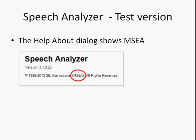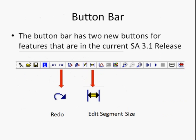You'll know this version is the test version because of the letters MSEA in the Help About box. There are two new buttons on the button bar — these features are currently in the 3.1 release: the Redo button and the Edit Segment Size button, just to make them easier to get to.